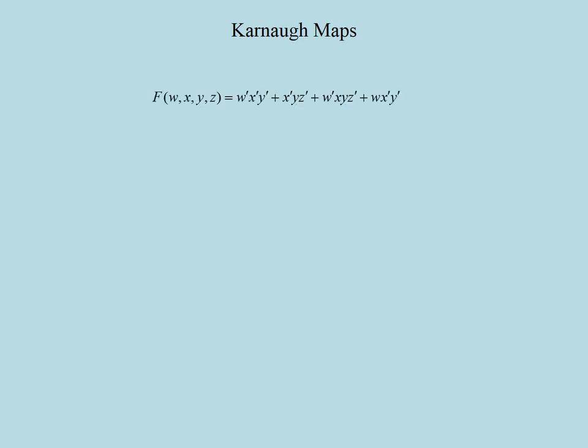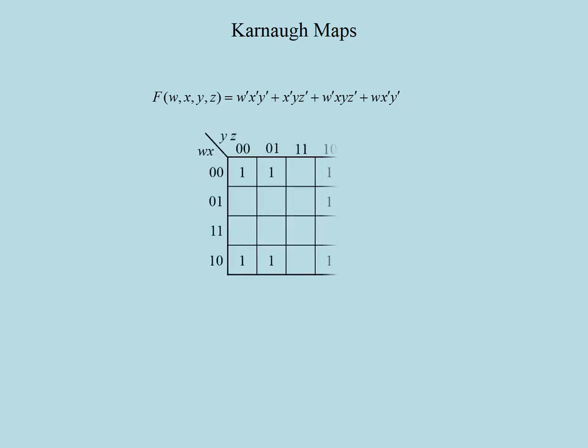Now let's try to simplify a function of 4 variables: F of w, x, y, z, given with this expression. Since the number of min terms will be between 0 and 15, we need a 16-square map, organized as 4-by-4. Checking the terms in the function and marking the w and x rows and y and z columns, we can get the Carnot map of this function. Note that not only the columns, but also the rows are enumerated in gray code order.